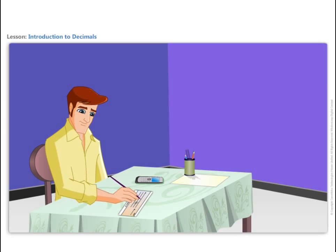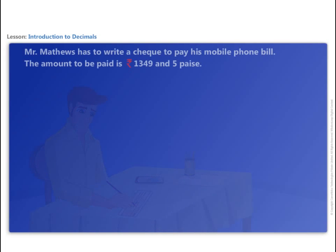Mr. Matthews has to write a check to pay his mobile phone bill. The amount to be paid is rupees 1349 and 5 paise. How would Mr. Matthews write this amount in rupees?